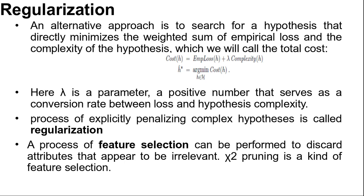Now regularization. We already saw how to do model selection with cross-validation on model size. An alternative approach is to search for a hypothesis that directly minimizes the weighted sum of empirical loss and the complexity of the hypothesis. We call the total cost: Cost(h) equals EmpiricalLoss(h) plus λ times Complexity(h).